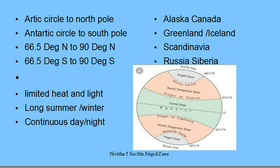The countries existing in the Frigid Zone include Alaska, Canada to a certain extent, Greenland and Iceland — mostly not populated — Scandinavia, which is sparsely populated, and Russia and Siberia with very little population. These are in the North Frigid Zone.